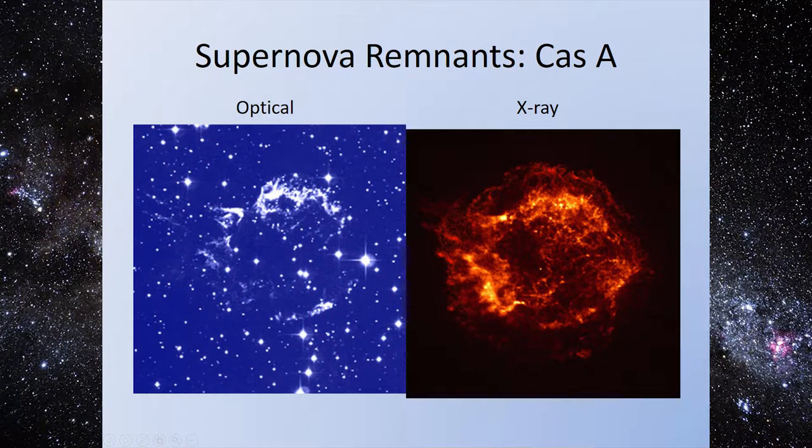Here are the supernova remnants from Cassiopeia A, shown in optical and X-ray. We often find a lot more information looking outside the visible spectrum, because really visible light is like 2% of what's out there. If we limit ourselves to optical telescopes, we limit ourselves to looking at 2% of available information. That's why we keep building telescopes sensitive to different parts of the spectrum, like the James Webb telescope, which is an infrared telescope that will allow us to see a section of the history of our solar system and universe that we've never been able to look at before.